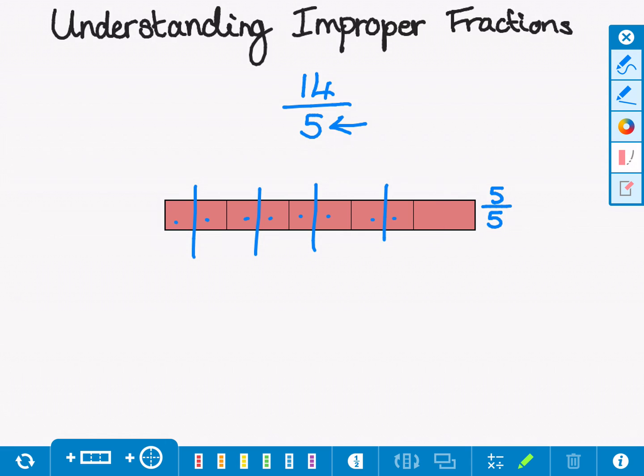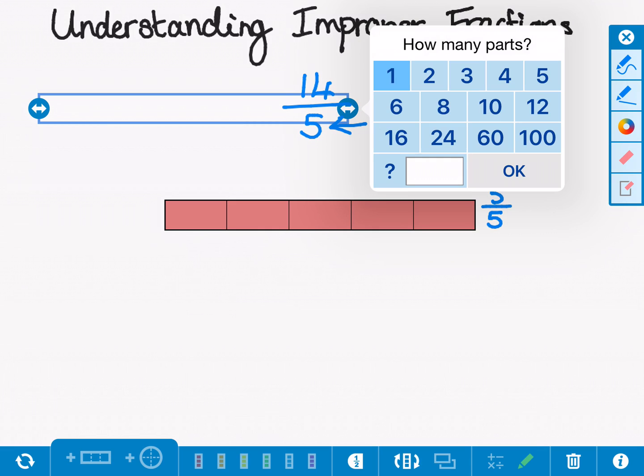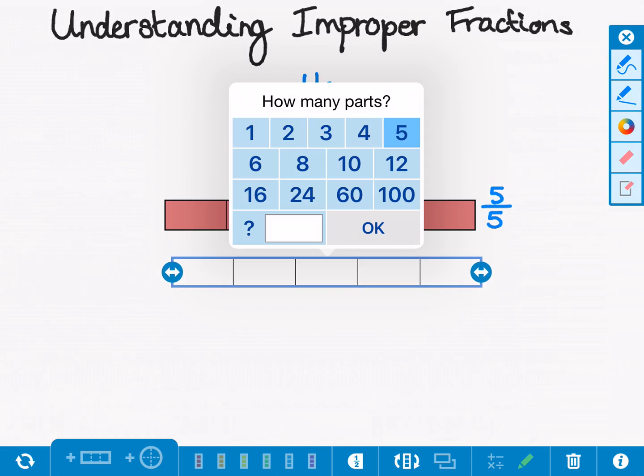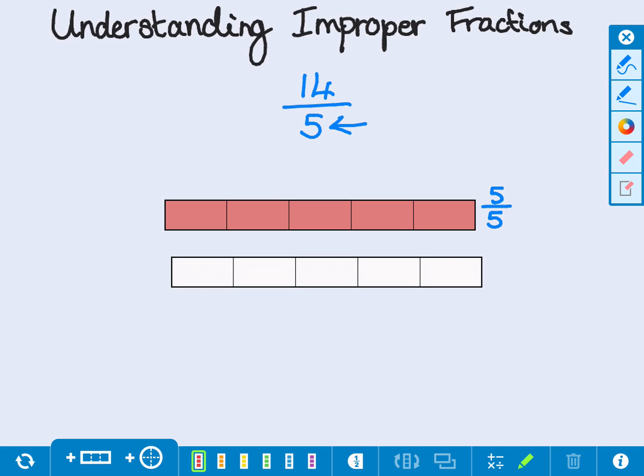So what we actually need to do is get another whole bar and break that into fifths as well and then shade those as well. So 5 fifths, 6 fifths, 7 fifths, 8 fifths, 9 fifths and 10 fifths.